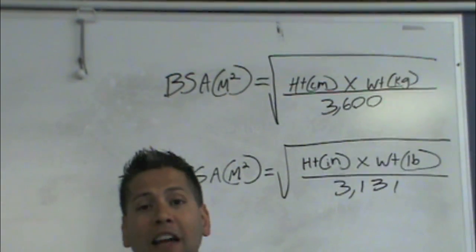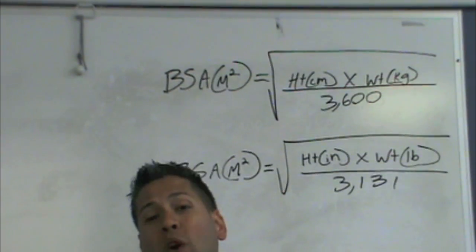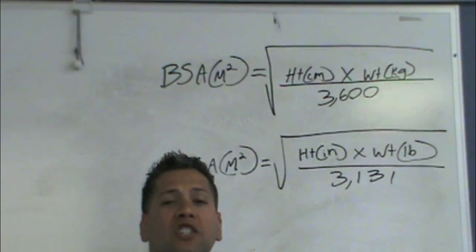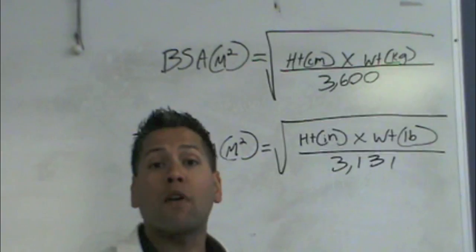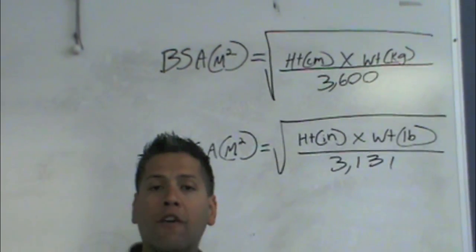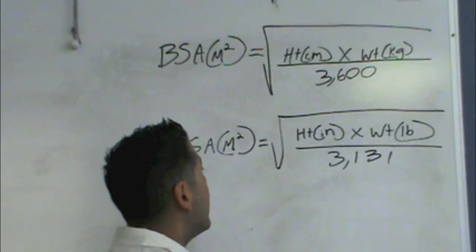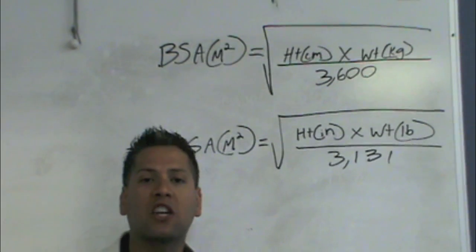Now, a lot of times people forget what to divide it by. And I always say, everywhere around the world, they always use centimeters and kilograms. So everywhere around the world, there's a circle. What's the circumference of a circle? 360 degrees. Just add a zero and you'll get 3,600.